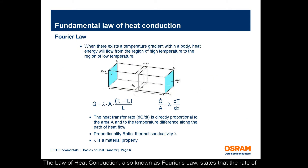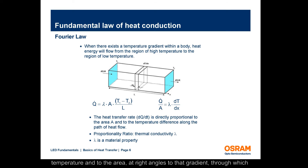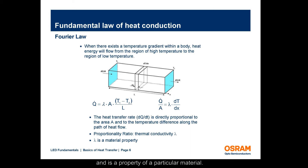The law of heat conduction, also known as Fourier's law, states that the rate of heat transfer through a material is proportional to the negative gradient in the temperature and to the area at right angles to that gradient through which the heat is flowing. The proportionality ratio is called the thermal conductivity and is a property of a particular material. Thermal conductivity is measured in watts per kelvin per meter.